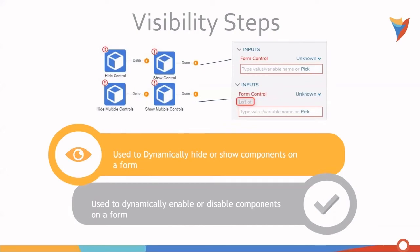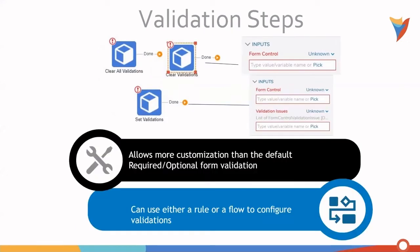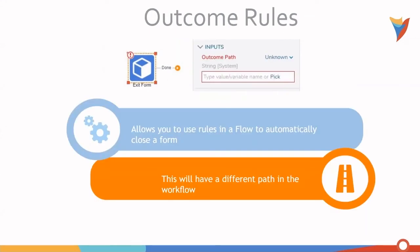Visibility steps are used to dynamically hide or show components on a form, and they can also dynamically enable or disable components. Validation steps allow more customization than the default required or optional form validations, and they can be used through a rule or a flow. Outcome rules allow users to automatically close a form and allow different paths in a workflow to exist.